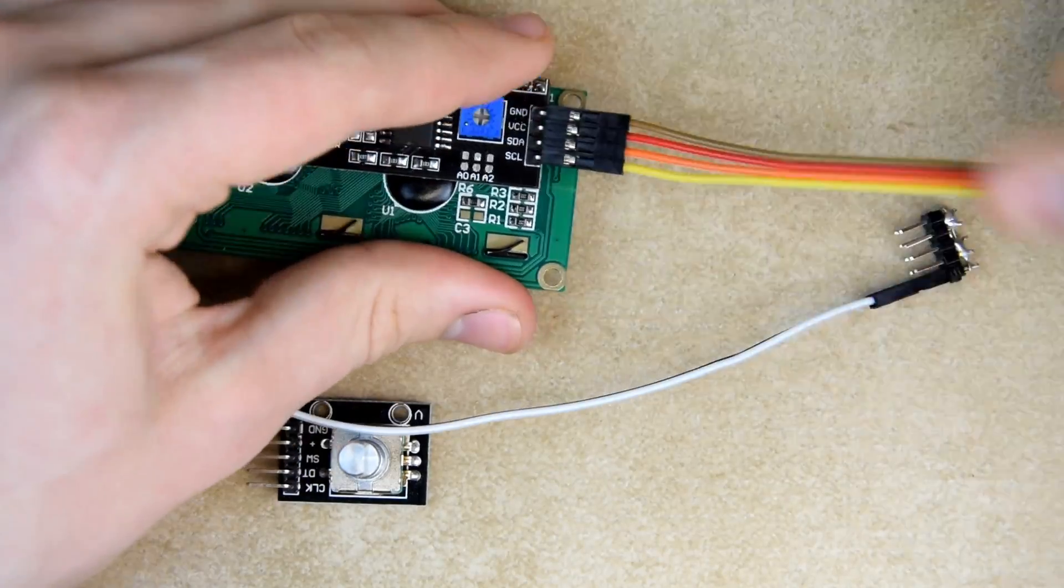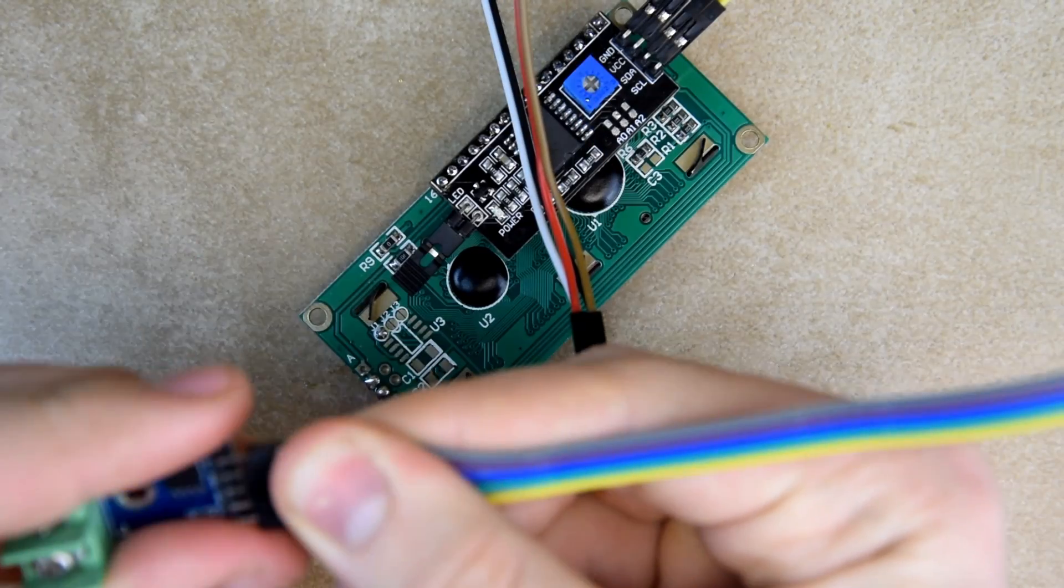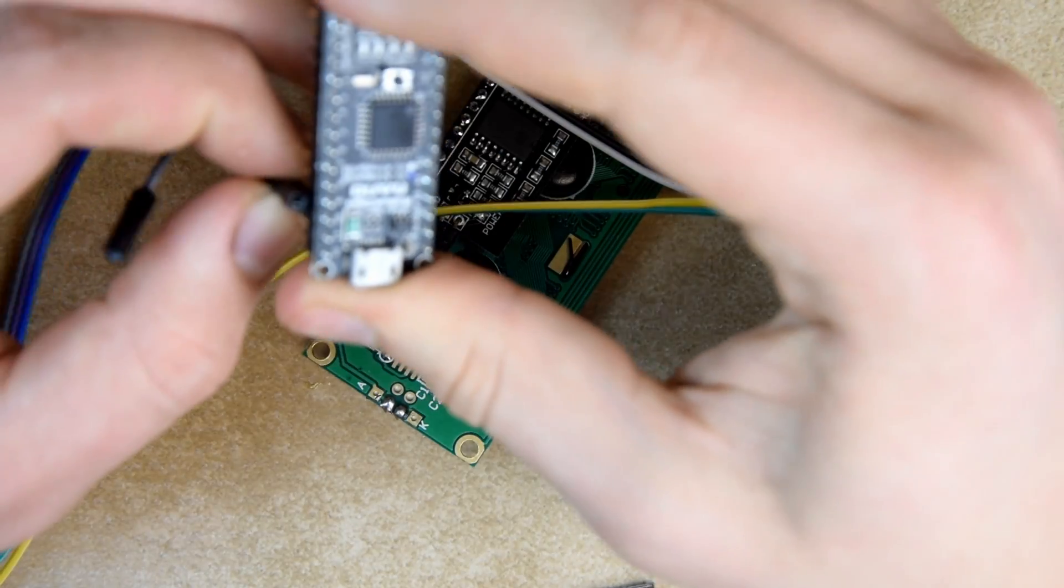Next, we attach the I2C adapter to the LCD connected to power and the Arduino. We do the same thing with the MAX6675 board and the encoder.